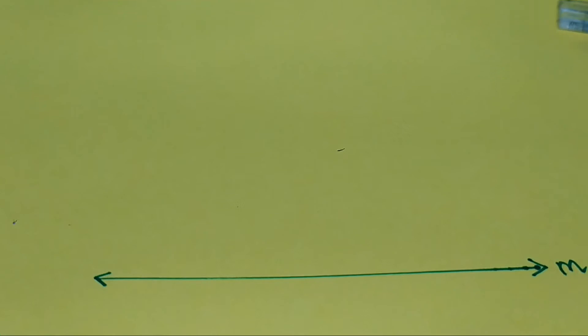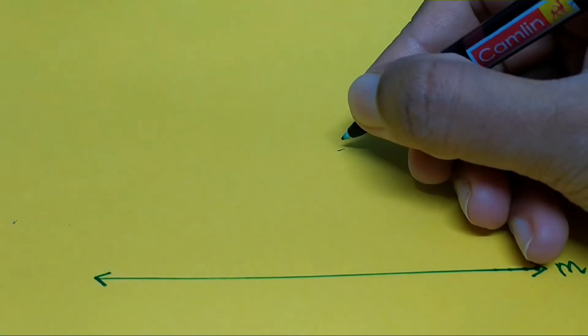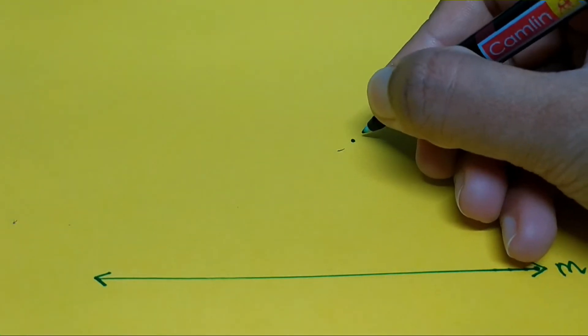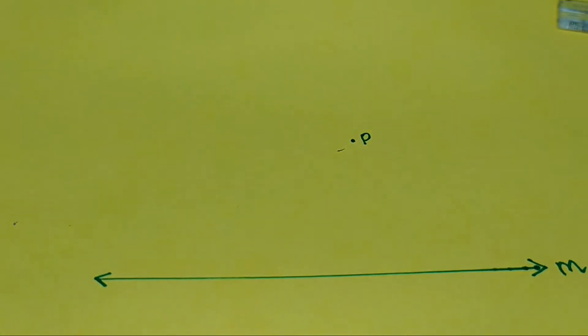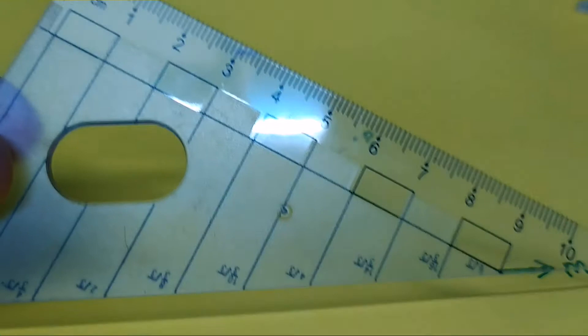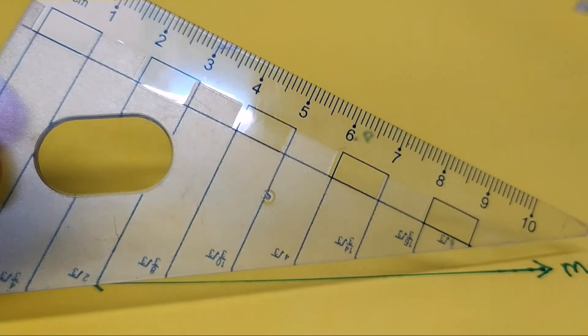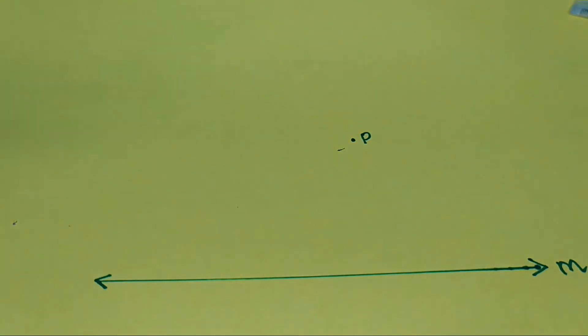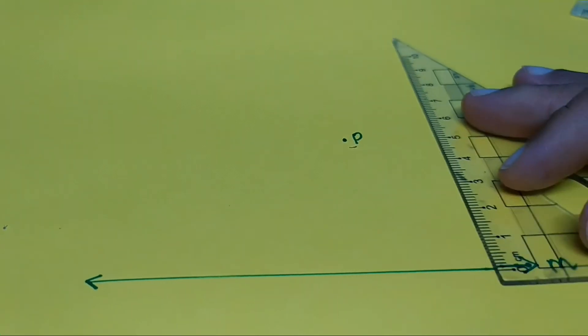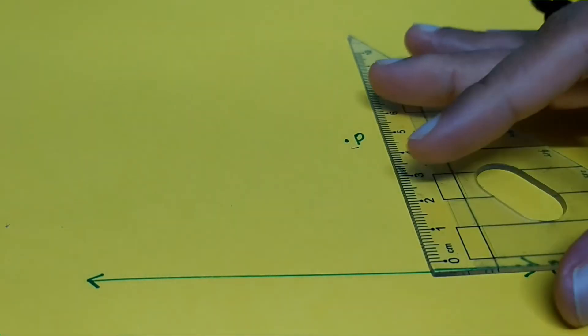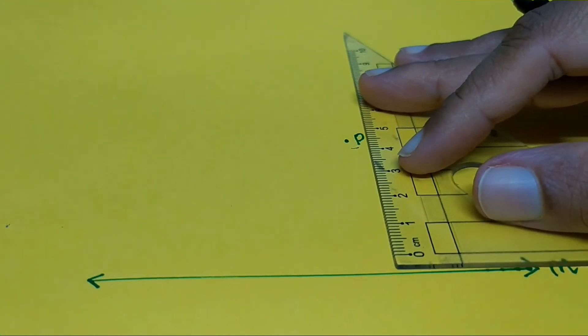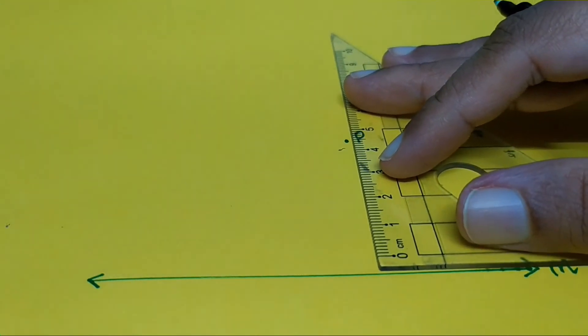Now I'm going to take point P anywhere outside the line. I'm going to take this 30-60 longer edged set square, place it like this, make sure the base of the set square is at the base of the line, and drag it right up till point P.